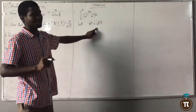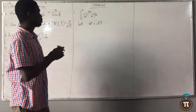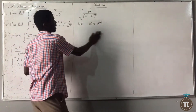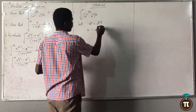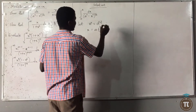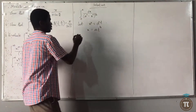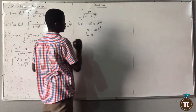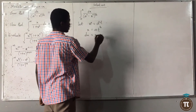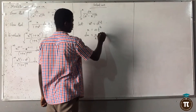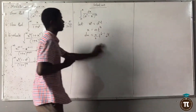Let s^n be equal to a^n·t. If I make s the subject, s will be equal to (at)^(1/n). So differentiating, ds equals a/n · t^(1/n - 1) dt.